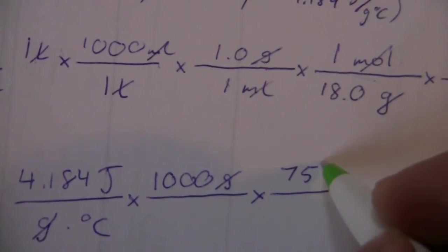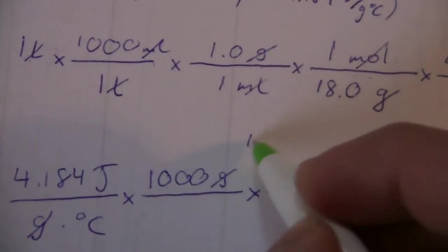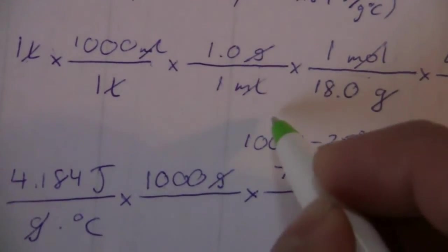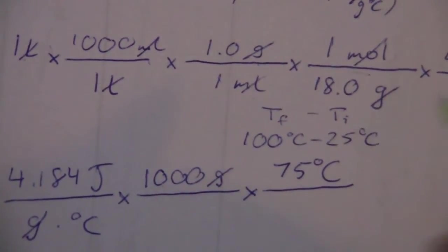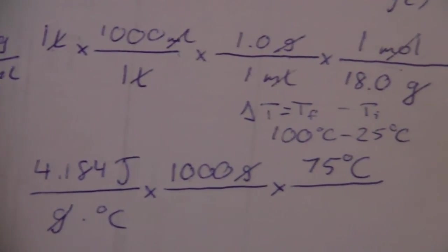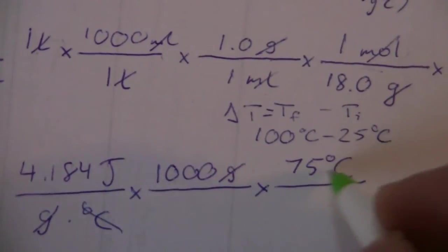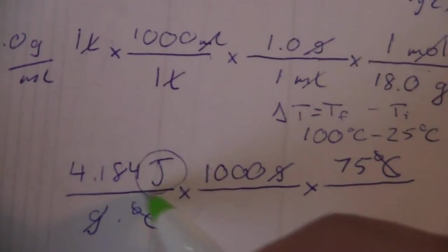75 degrees C is our temperature change that comes from our 100 minus 25. The final, we can say Tf minus Ti, that's our change in temperature. So now, our degrees C cancels and we're left with joules.